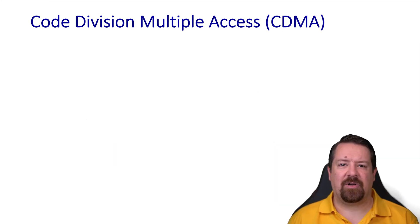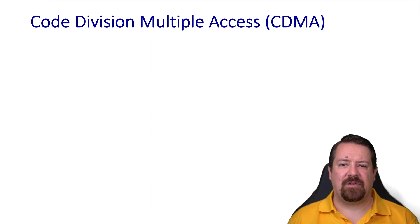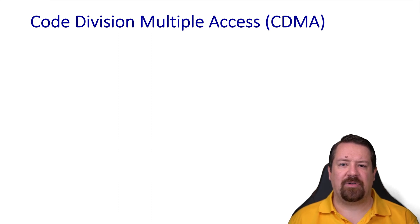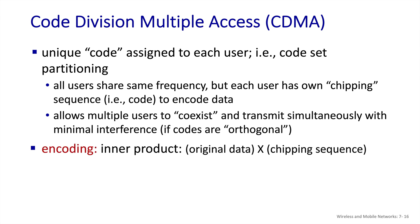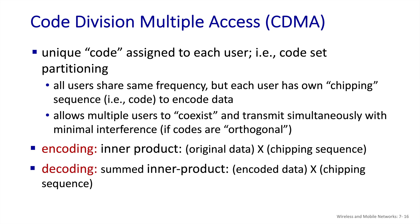Earlier in the link layer, we talked about bandwidth-sharing mechanisms: TDMA (time division multiple access) and FDMA (frequency division multiple access). There's one more: CDMA, code division multiple access. This is not used in wired environments, so we saved it for the wireless chapter. In CDMA, a unique code is assigned to each user — all users transmit on the same frequency, unlike FDMA. Before transmitting, they encode their data using an assigned chipping sequence. These chipping sequences are orthogonal to one another. The encoding consists of taking the inner product of the original data with the chipping sequence, and it is decoded by taking the summed inner product of the encoded data and the chipping sequence.